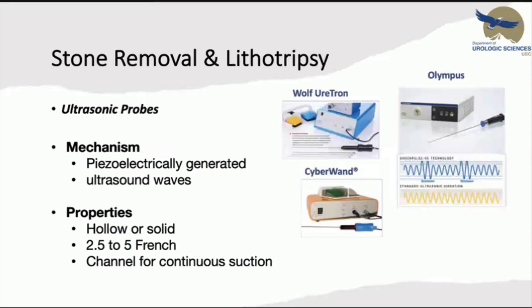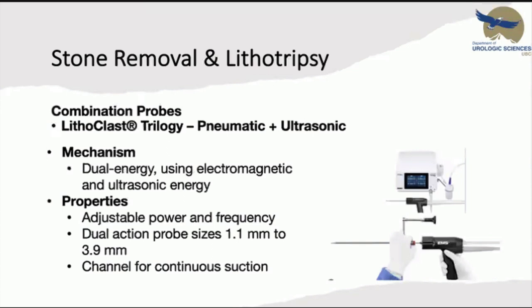Ultrasonic probes use piezoelectrically generated ultrasound waves and have a channel for continuous suction, with 2.5 to 5 French probes available. The combination probe — the Trilogy from Lithoclast — has both pneumatic and ultrasonic capability with dual energy using electromagnetic and ultrasonic energy, adjustable power and frequency, probe sizes ranging from 1.1 mm to 3.9 mm, and a channel for continuous suction.